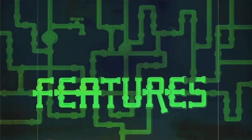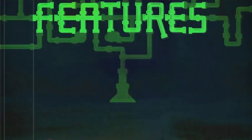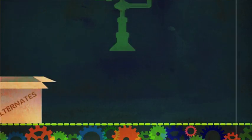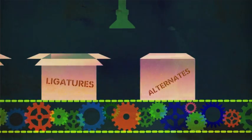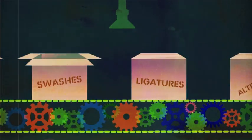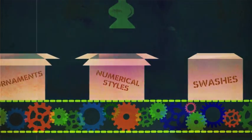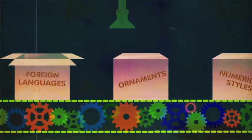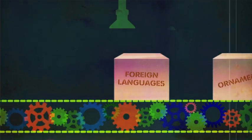In addition to the basic alphabet, numbers, and punctuation you see on your keyboard, an OpenType font might include alternates, ligatures, swashes, numerical styles, ornaments, and support for foreign languages.